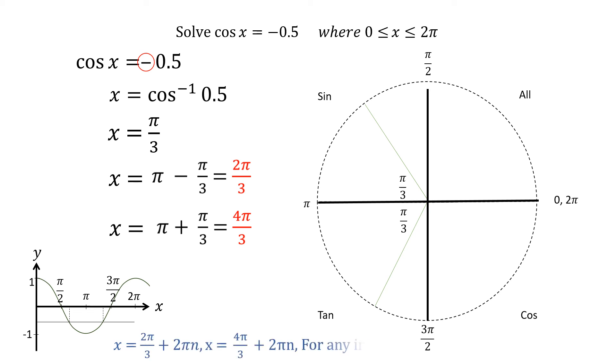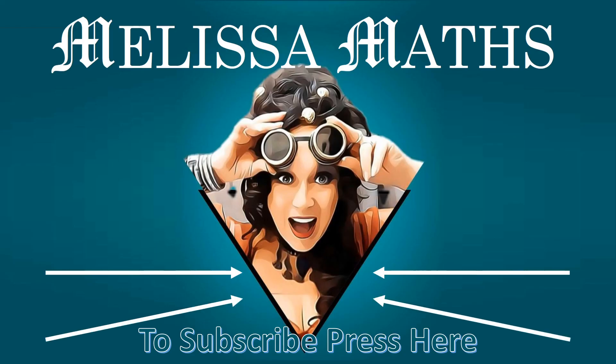The period of cos x is 2 pi, so values will repeat every 2 pi radians in both directions.